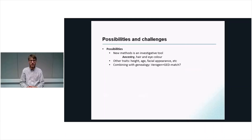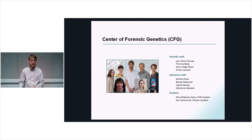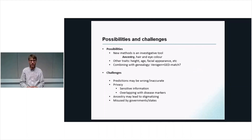My last slide covers possibilities and challenges. The possibilities are that these new methods can provide an investigative tool for the police. Ancestry might be the most powerful of these measurements, but other researchers are working on other traits as well. Combining such analysis with genealogy studies might be very powerful. Among the challenges: there might be wrong or inaccurate measurements. Privacy is of course a concern, as this is sensitive information. Some of the markers may even overlap with disease markers. Ancestry may lead to stigmatization of groups, and of course this methodology might be misused by governments.